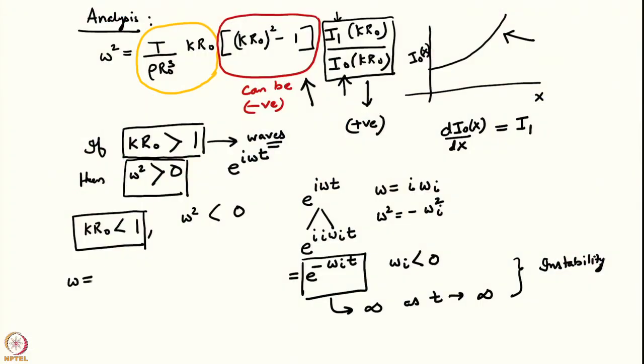We will try to understand the physical reason why this exponential growth happens. Let us analyze the growth in a bit more detail by writing ω = i·ωi in the dispersion relation. This ωi will tell us something about the rate at which things grow. It leads to a quadratic equation for ωi; there will be a positive and a negative value. The negative value gives divergence in time while the positive value decays exponentially fast. We will continue this in the next class.